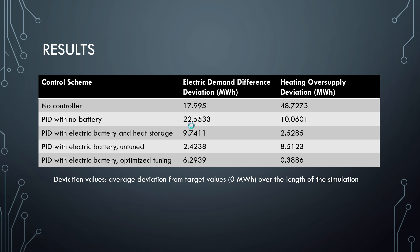We started with the base value for both our electric and heating oversupply. In order to be advantageous, the system had to have lower deviation values than those baselines. This is a couple of the systems we tried that seemed somewhat feasible — there were others that weren't as robust. For example, we used a PID controller but removed the battery to see what kind of result we'd get.